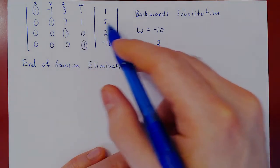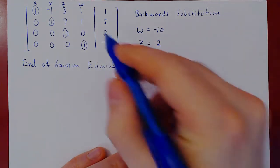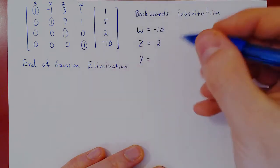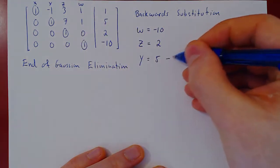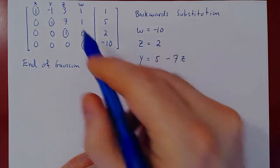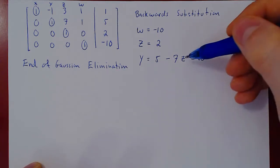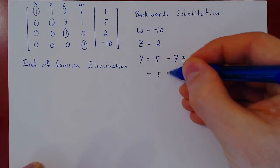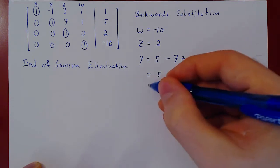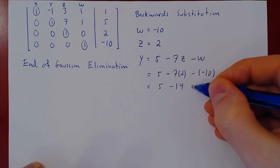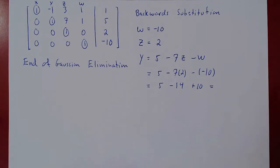Moving up one more row, things are a bit more interesting as both coefficients here are non-zero. We solve for y: look at the equal sign first — equals five. There's a positive seven z on the left hand side; on the right it becomes a negative seven z. There's a positive w on the left hand side; on the right it becomes a negative w. But we know z and w, so we can replace: we get five minus seven times two, minus negative ten, which gives us five minus fourteen plus ten. Negative fourteen plus ten is negative four, plus five: positive one.